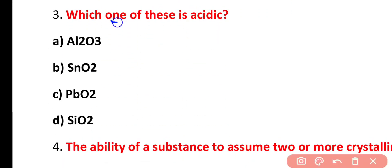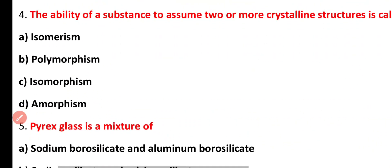Question number 3. Which one of these is acidic? Al2O3 or SNO2, lead oxide or lead dioxide? Correct answer is option D. Lead dioxide has acidic property among the given.